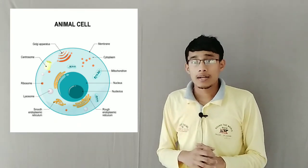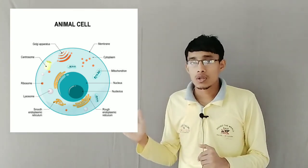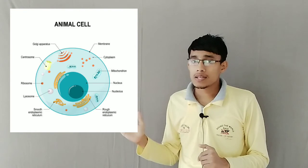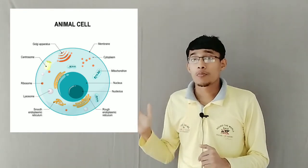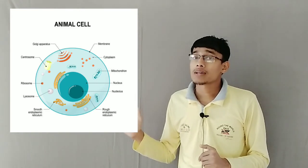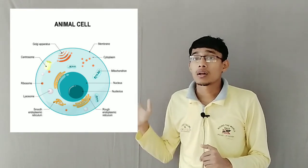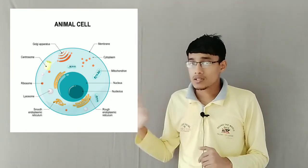In the animal cell, apart from the cell membrane, you will see the nucleus, Golgi complex, mitochondria, endoplasmic reticulum, cytoplasm, and other organelles. Chloroplasts are absent in animal cells.